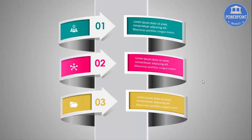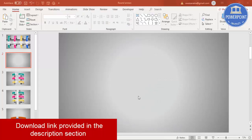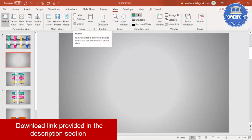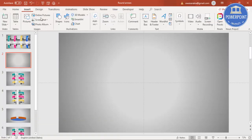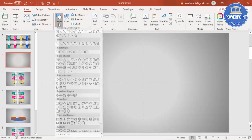Let's see how to create this four or three option circular infographic slide in PowerPoint. I've added a new slide and changed the background to a gradient fill. Go to View and check the guidelines. I'm going to add two oval shapes.